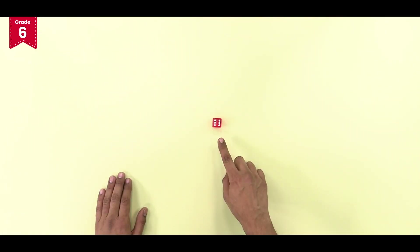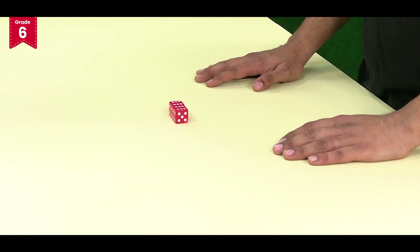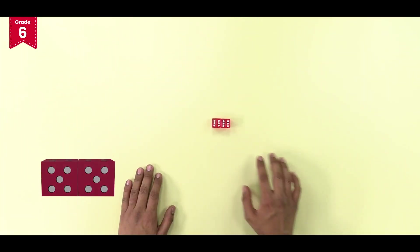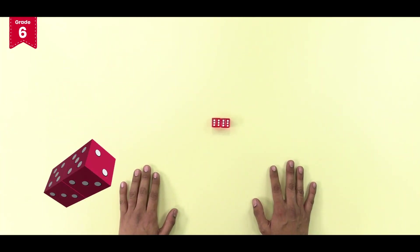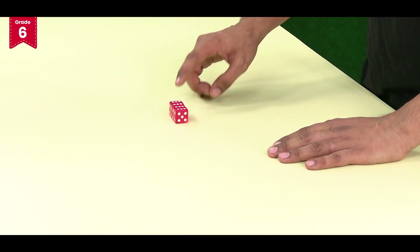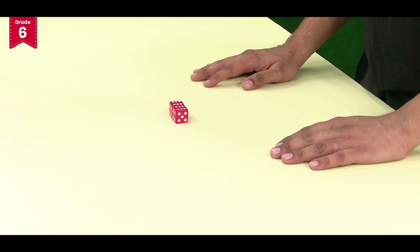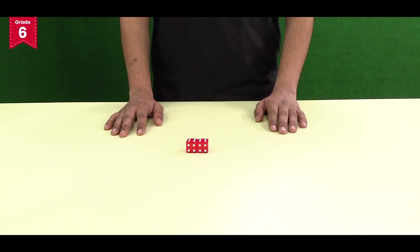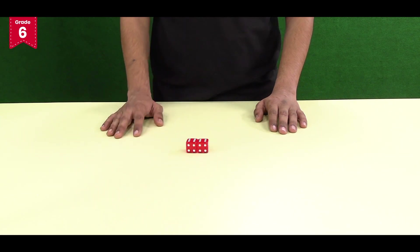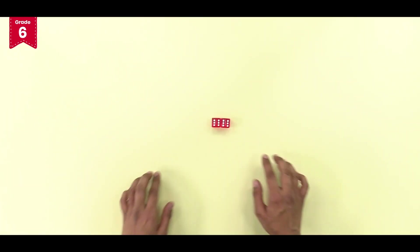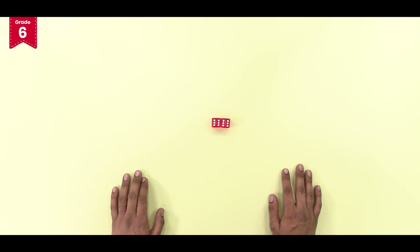Let us join this die with another die and measure the total surface area of the cuboid so formed. To measure the total surface area of this cuboid shape, we need to count the total number of square faces which are open or visible, including the ones at the bottom.